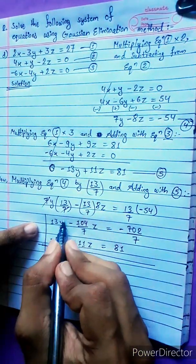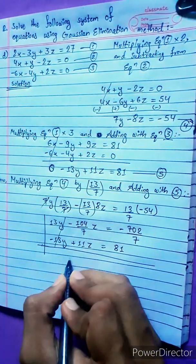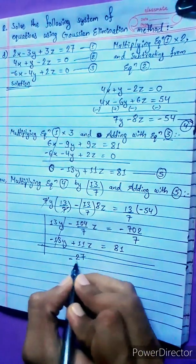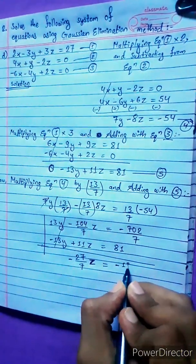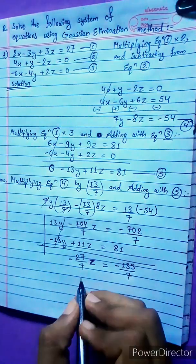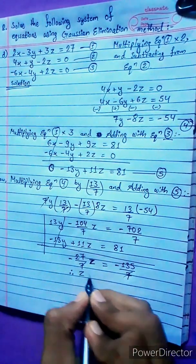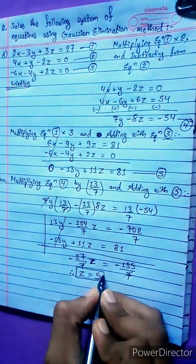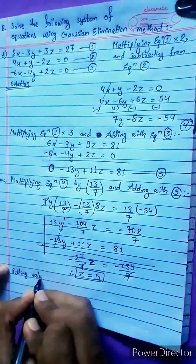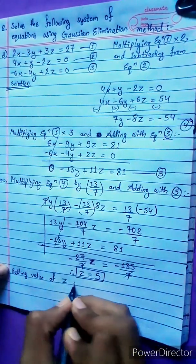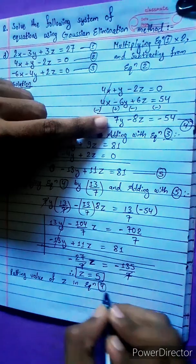Adding the two equations, the y terms cancel. The calculator gives minus 27/7 · z equals minus 135/7. The 7s cancel, giving z equals 5.